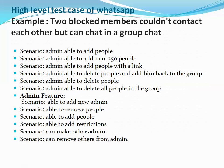For WhatsApp group scenarios, you can add cases like: the admin is able to add people, it can add a maximum of 256 people, it can add people with a link, the admin is able to delete and re-add people after 24 or 48 hours, and the admin is able to remove all people from the group. You should also consider what happens when an admin adds another person and gives them admin rights — scenarios for when there are one, two, or more than two admins, including a case where a new admin removes the original admin.